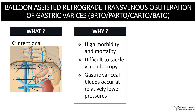Unlike esophageal variceal bleeds, gastric variceal bleeds are associated with high morbidity and mortality, which in some studies has been accounted to be more than 50%. They are difficult to tackle via endoscopy, not only because of access issues but because of the high-flow shunt which prevents sclerosant or glue from being confined within only the gastric varices. Earlier, interventional management was largely limited to TIPS, which results in a global reduction of portal venous pressure.